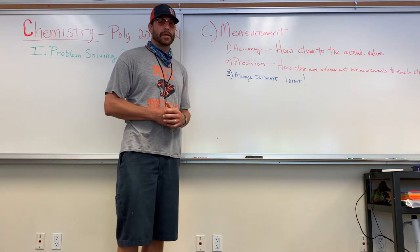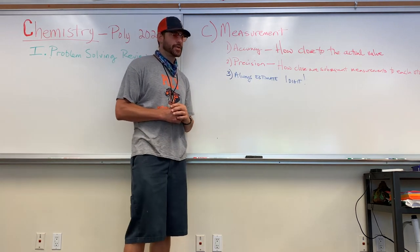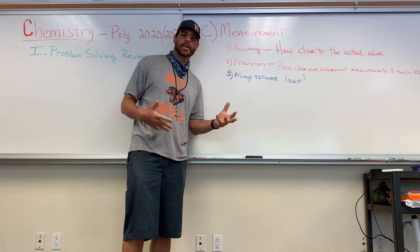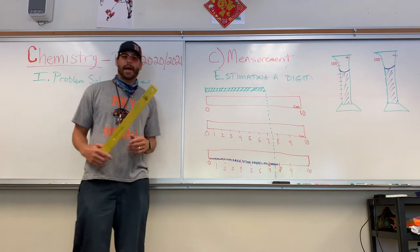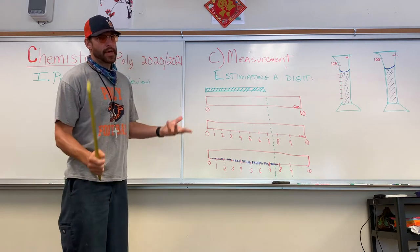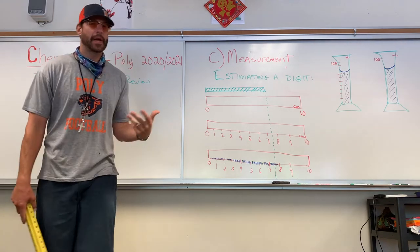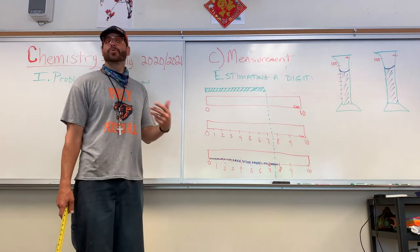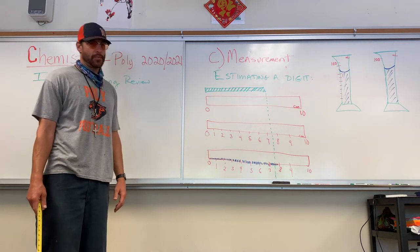Whenever we measure something, it's always our job to estimate one digit. We're always trying to estimate one digit beyond the smallest unit of our instrument. Unfortunately, the ruler I have up here may not show well on video, so I drew some measurement devices on the board to illustrate what I mean by estimating a digit.